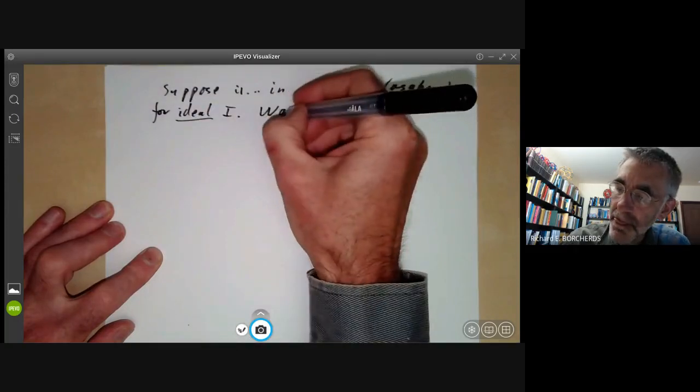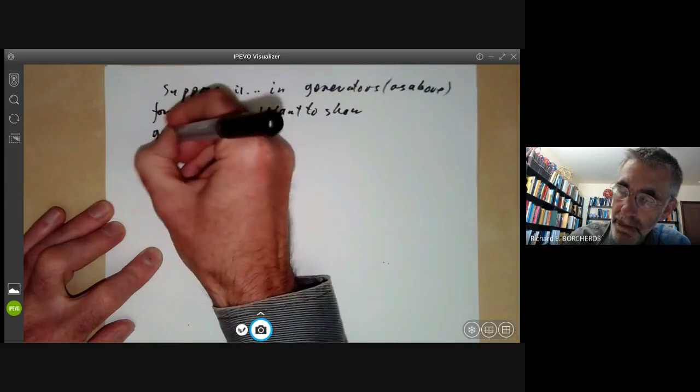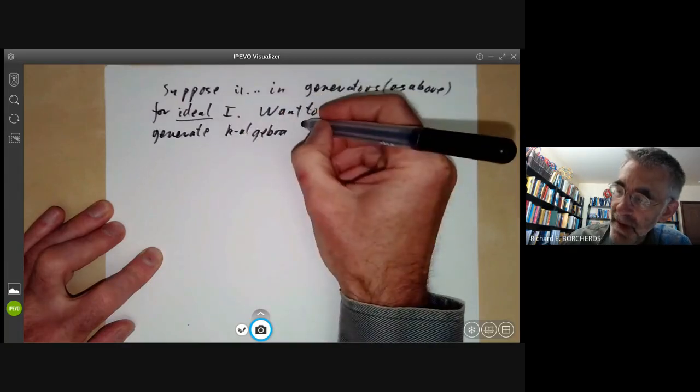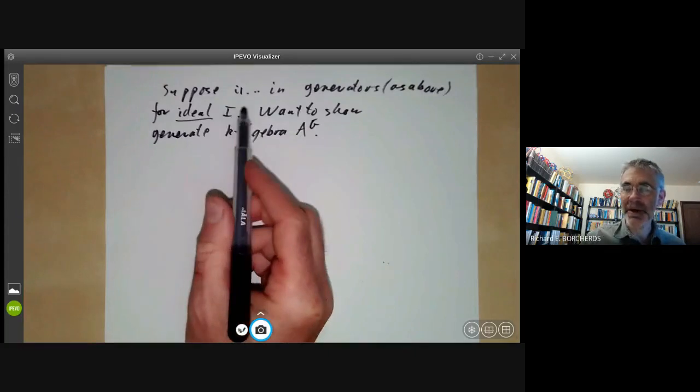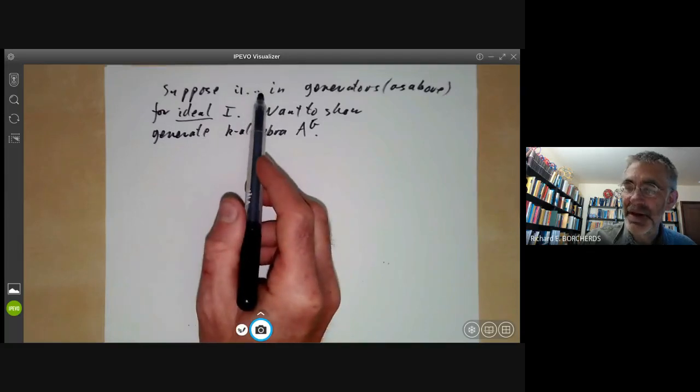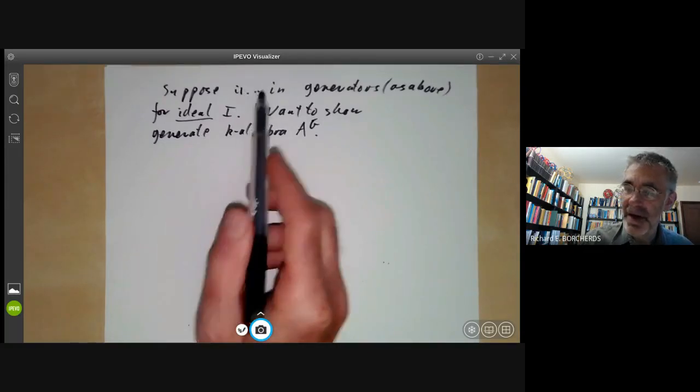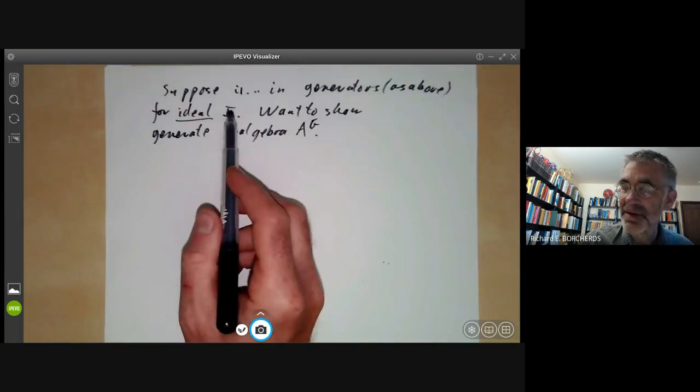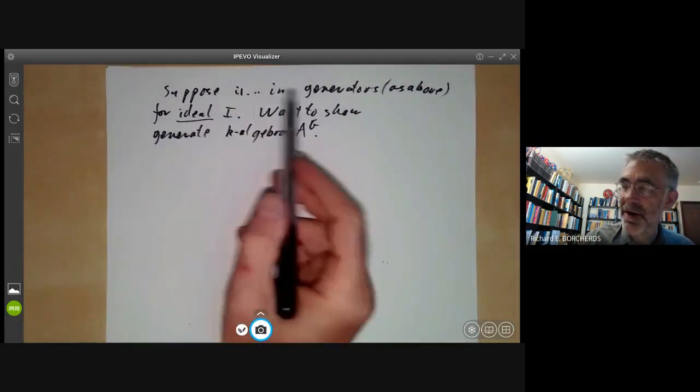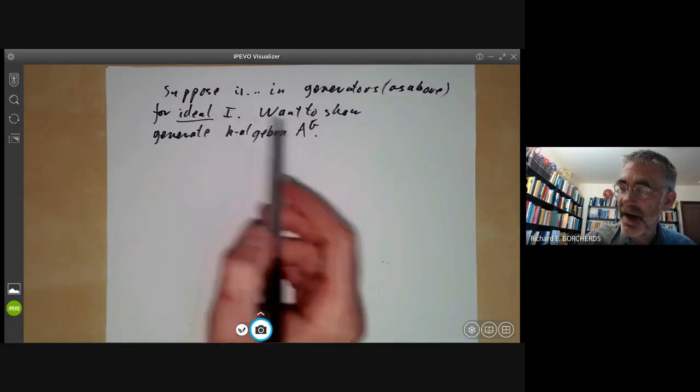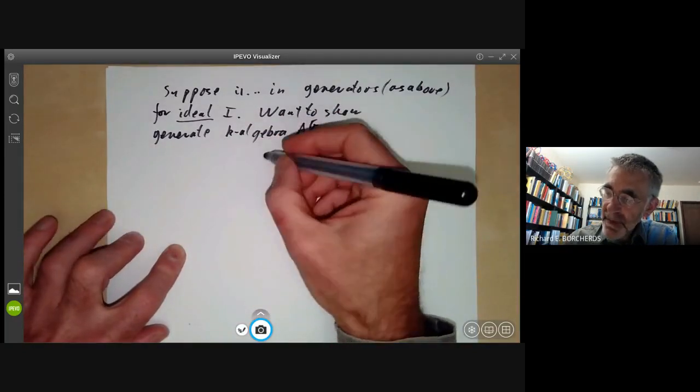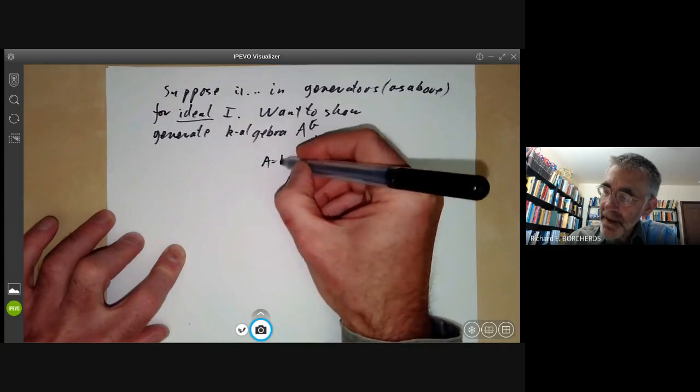We want to show they generate the k-algebra A^G. So you've got to be a bit careful here. There's a big difference between a set of elements generating an ideal and then generating an algebra. So if you're talking about them generating something as an algebra, you're allowed to multiply them and add them and so on. If you're talking about them generating an ideal, you're also allowed to multiply these generators by any element of A, which will be quite a lot more. So there's no particular reason why if they generate the ideal A, they should generate the algebra A. For example, suppose